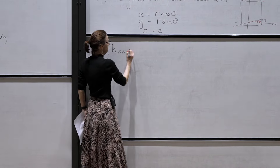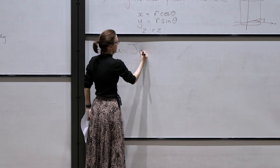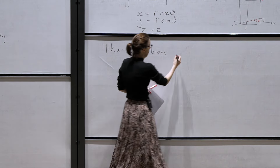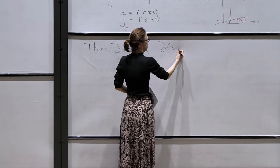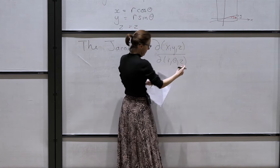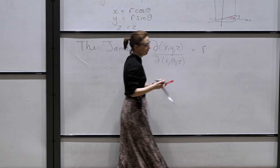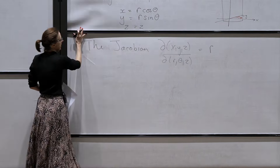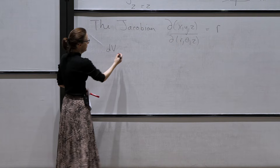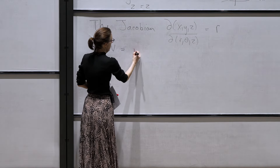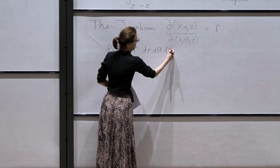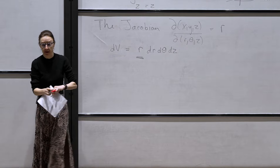We're going to need to know what the Jacobian is. The Jacobian d(x,y,z)/d(r,theta,z) is just given by r in this case. So when writing volume elements in the cylindrical polar coordinate system, dv becomes r dr dtheta dz — it's important to remember the Jacobian here.